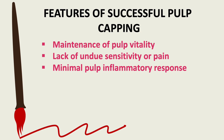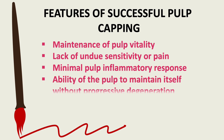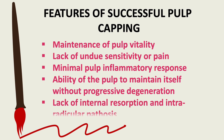Signs of successful pulp capping: maintenance of pulp vitality; lack of undue sensitivity or pain; minimal pulpal inflammatory response; ability of the pulp to maintain itself without progressive degeneration; lack of internal resorption and intra-radicular pathosis. I hope that pulp capping is now clear to all.